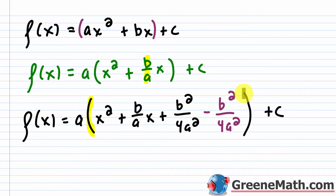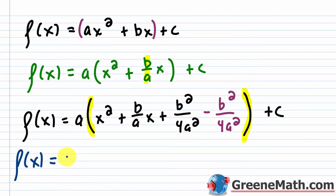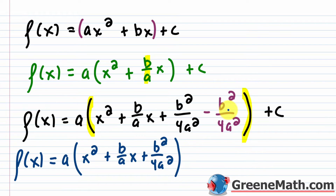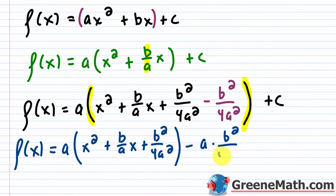Now I want to get the perfect square trinomial by itself. Since a is multiplying everything inside the parentheses, I can't just move the subtracted term outside freely. So I write f of x as a times the quantity x squared plus b over ax plus b squared over 4a squared, and then separately write minus a times b squared over 4a squared, and then plus c.